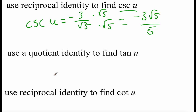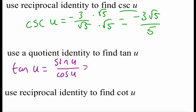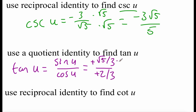As far as finding the tangent, I'm going to use one of my quotient identities. There's a quotient identity that says tangent of u is sine of u over cosine of u. We know sine of u is negative root five over three, and cosine is negative two over three. I see a couple of negatives, so those turn into a positive. Top and bottom each have a divided-by-three, so those cancel out, leaving us root five over two.